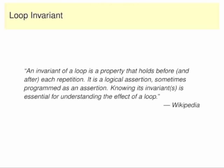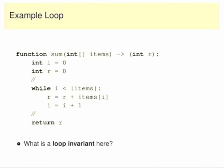The cool thing about Wiley is that we can actually write loop invariants. So here's a real simple loop — this is summing over the integers. What I want you to think about whilst I just boot this up is: what is a loop invariant here? What is a property of this loop which is true for each step of the loop?